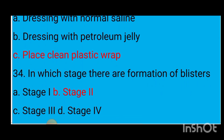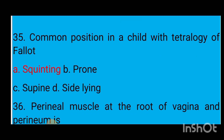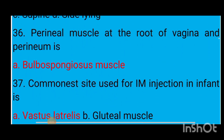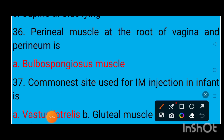Question number 34: In which stage is there formation of blisters? Option A stage 1, option B stage 2, option C stage 3, option D stage 4. The correct answer is option B — stage 2. Question number 36: The perineal muscle at the root of vagina and perineum is the bulbospongiosus muscle.